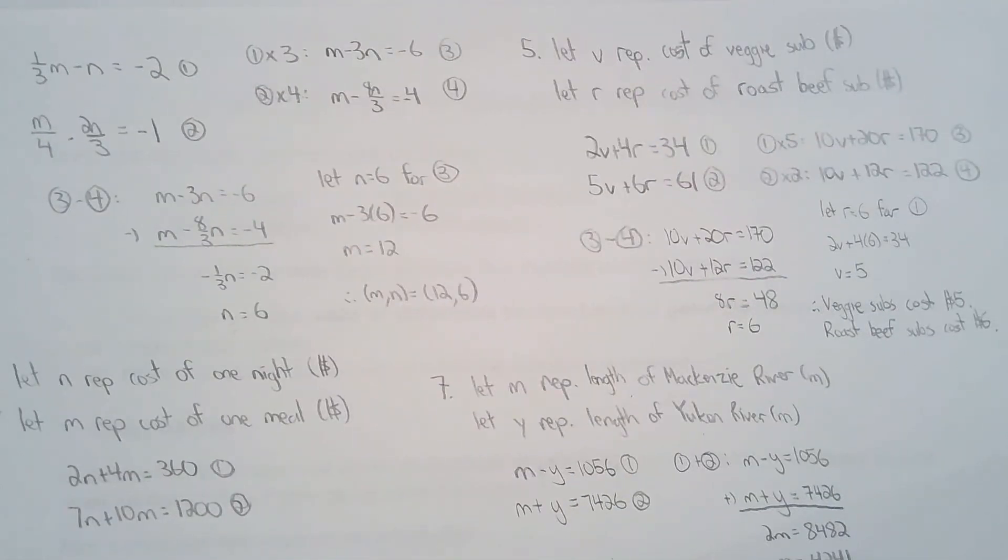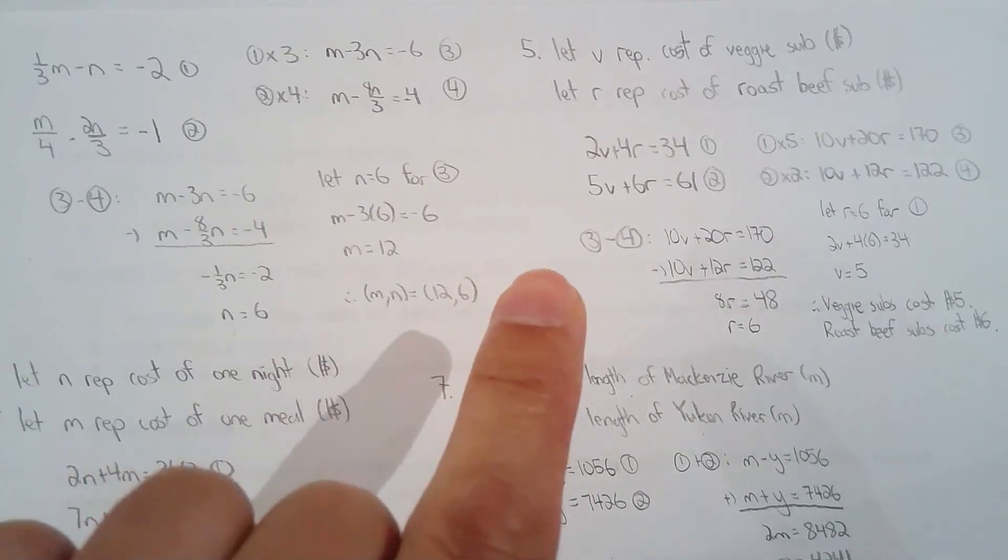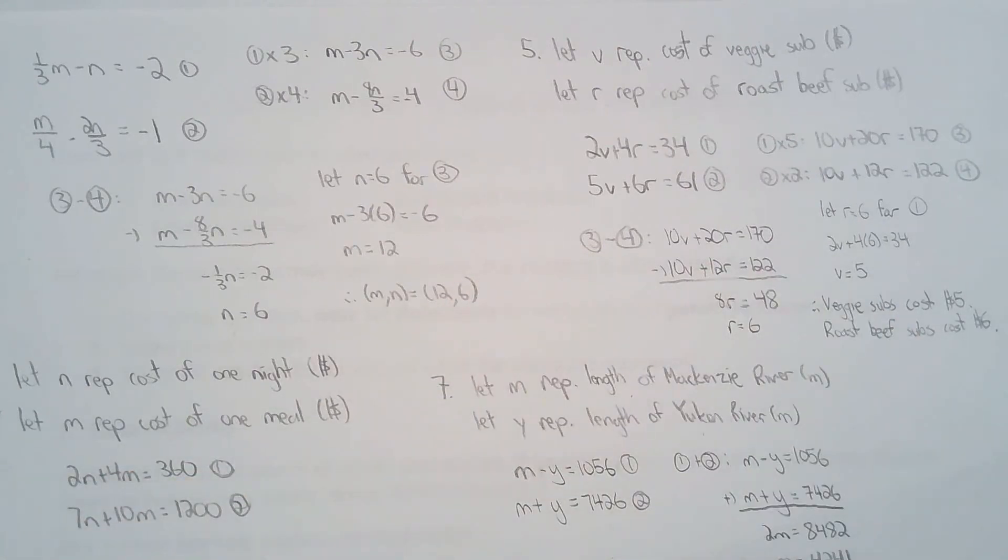Question five, just some veggie subs and roast beef subs, trying to find out the cost. I eliminated v. So I multiply equation one by five and equation two by two. That will give me 10v and 10v, subtract, and that eliminates v.